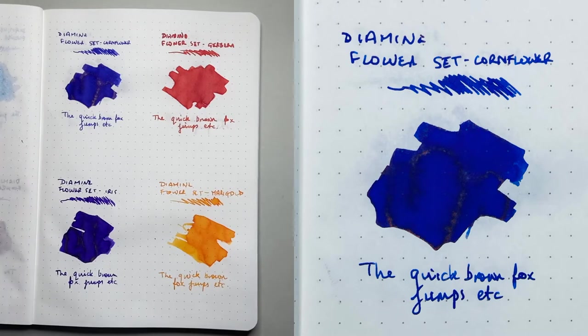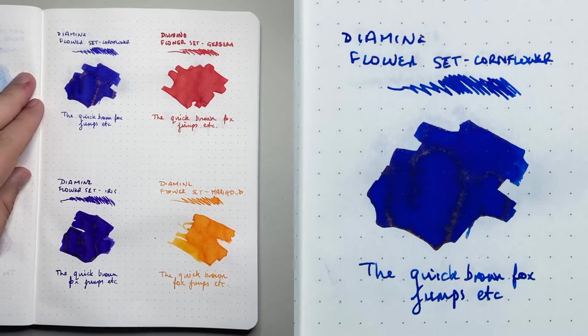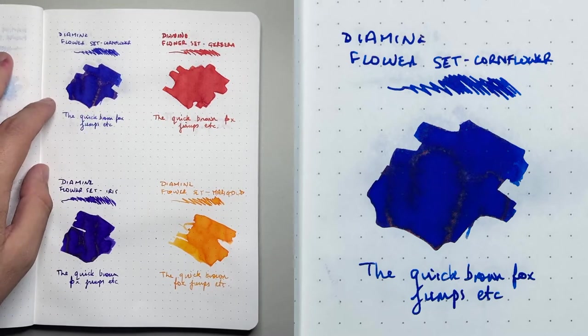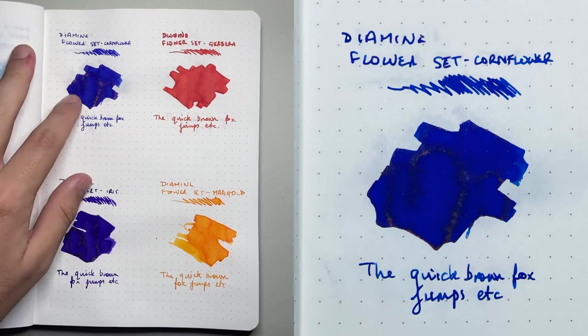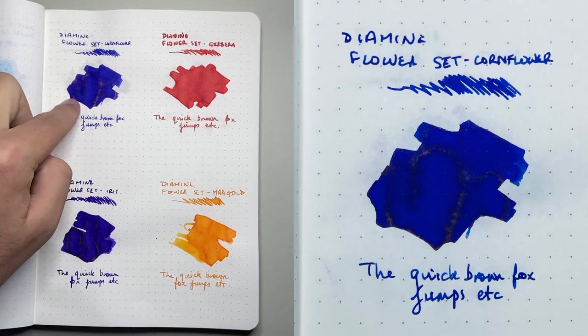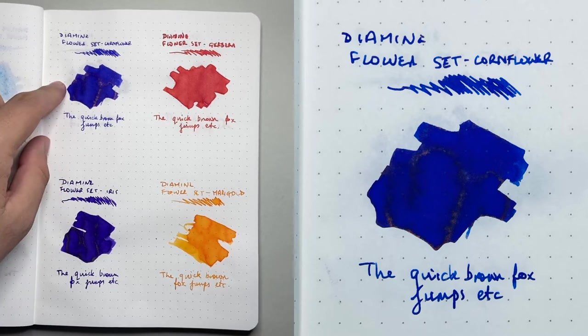Then we have Cornflower, which is a very nice blue. This is a slightly darker blue than Aster and a bit more vibrant, a bit more goldy copper sheen, but once again shades nicely from a nice dark royal to actually quite a nice saturated blue and performs really nicely as well.